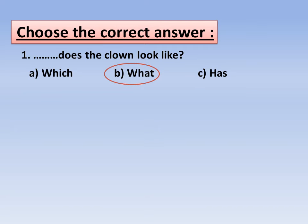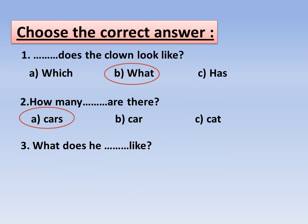Number two: How many, space, are there? Plural noun. How many cars are there? Very good. Number three: What does he, space, like? What does he look like? Very good, wonderful.